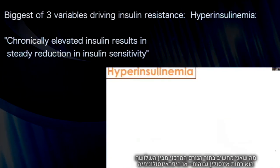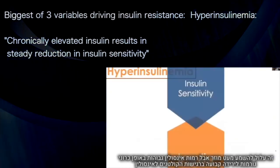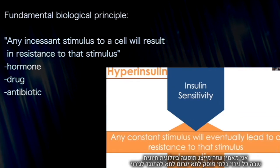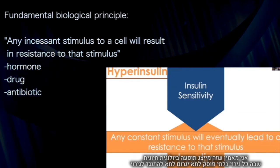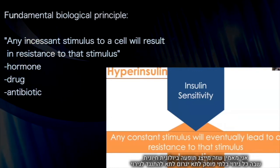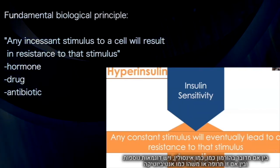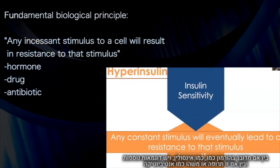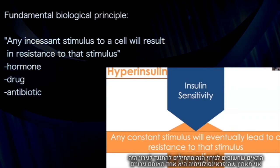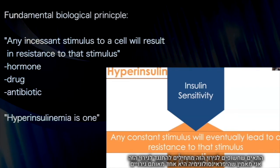Now to what I consider the biggest of these three variables: hyperinsulinemia. Chronically elevated insulin results in a steady reduction in insulin sensitivity. I believe this represents a fundamental biological principle — namely that any incessant stimulus to a cell will result in a resistance to that stimulus, whether it is a hormone like insulin, a drug, or something like an antibiotic. The cells exposed to this stimulus become resistant to it. I strongly contend that hyperinsulinemia is one of them.